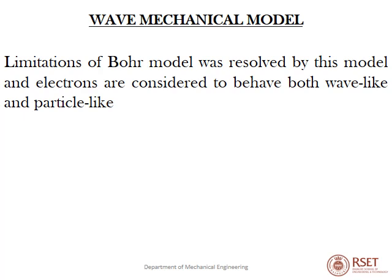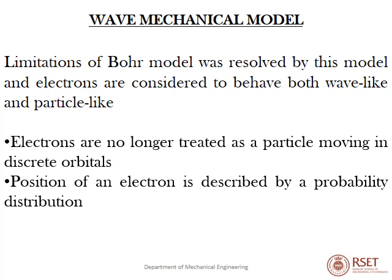A new model, the wave mechanical model, resolved the limitations of the Bohr model. Electrons are considered to behave both wave-like and particle-like. We can only find a region where the probability of finding an electron exists, rather than a discrete point where the electron is exactly located. The Bohr radius, already calculated by equation, is the region where we can have a probability. Electrons are no longer treated as particles moving in discrete orbitals.